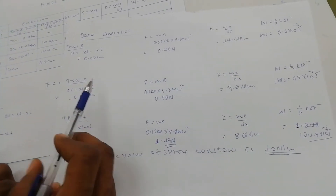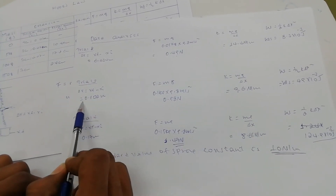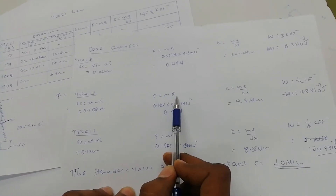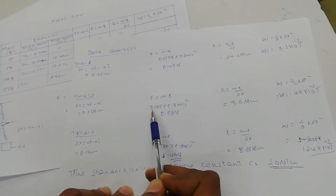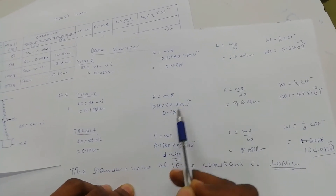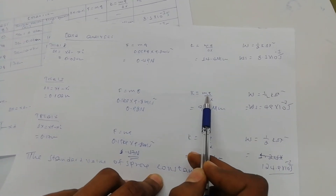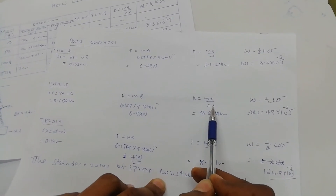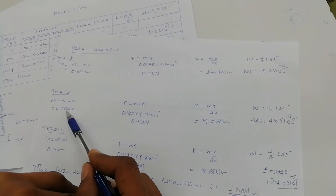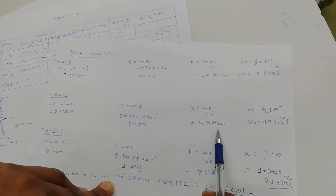For the third trial, when adding 100 grams, the amount of extension after subtracting is 0.102 meters. The force is m times g: 0.1 kilograms times 9.8 equals 0.98 newtons. The spring constant is mg divided by delta-x: 0.98 divided by 0.102 equals 9.6 newtons per meter for the third trial.